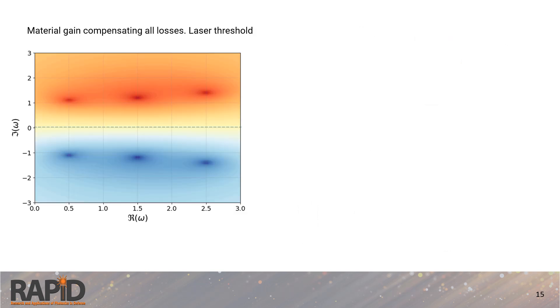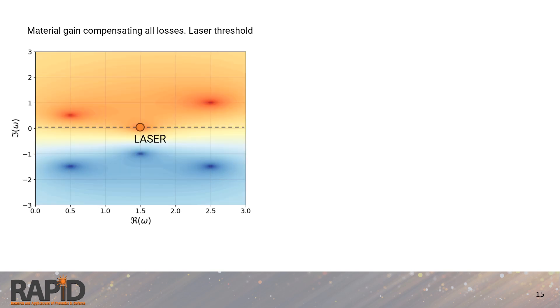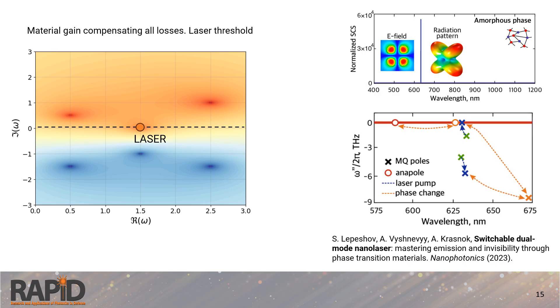Similarly, adding the right amount of gain can bring a pole to the real frequency axis, creating a so-called lasing threshold regime. In our recent nanophotonics work, we designed a nanolaser that switches from a bright lasing state to an invisible anapole state at the same frequency. This transition is enabled by a phase change in a material from crystalline to amorphous.